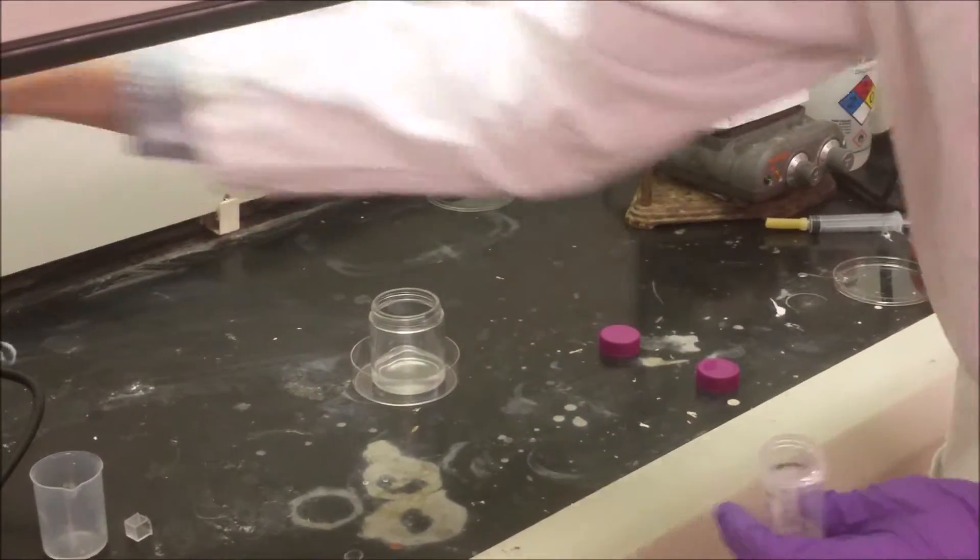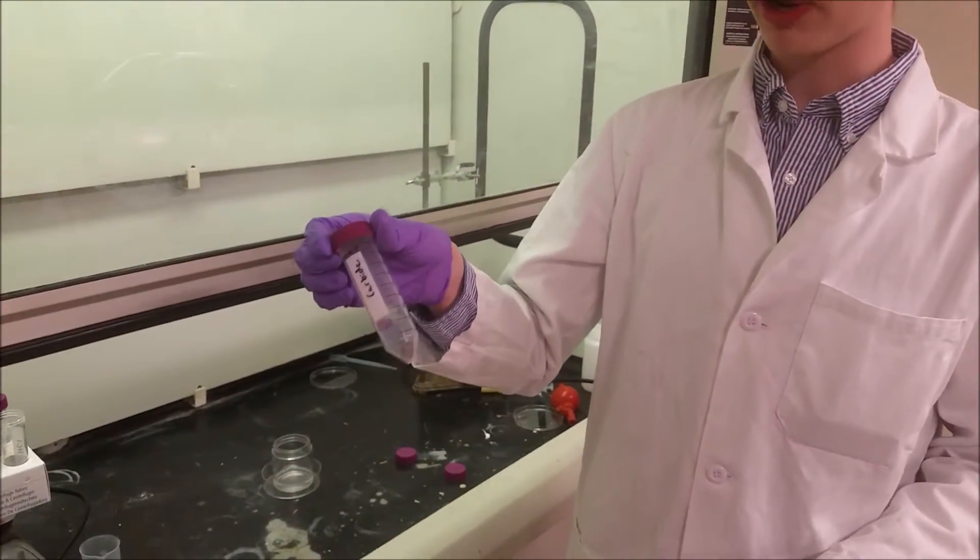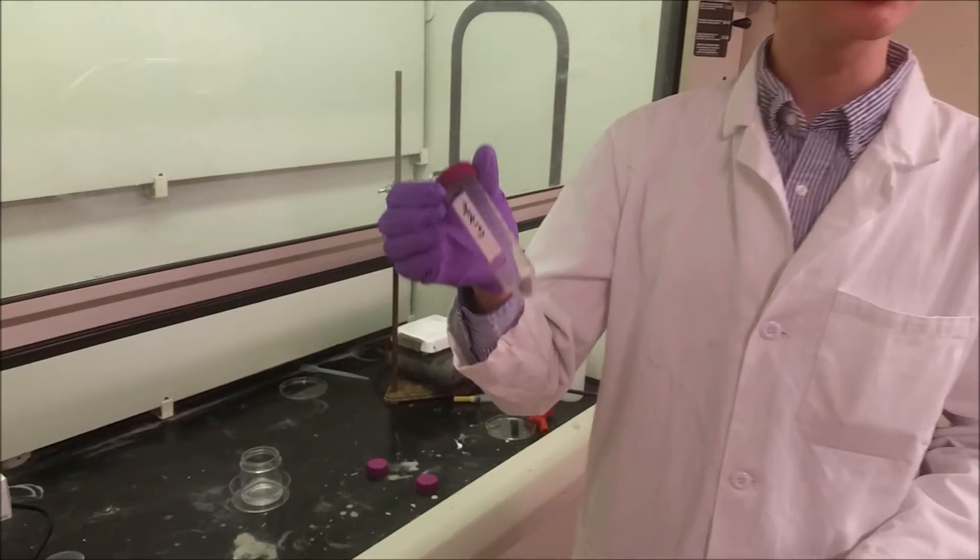And then we're going to prep our matrix rock. This is a material called calcium carbide, and when it interacts with water, it produces acetylene.